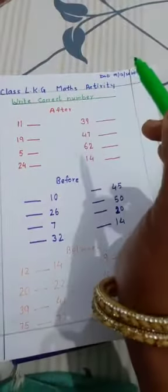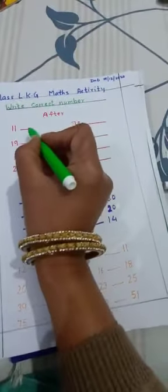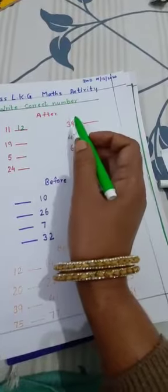Look here. Write correct number. What is this? This is after. After 11, 12. After 11, kya hooga? 12. After means forward counting.